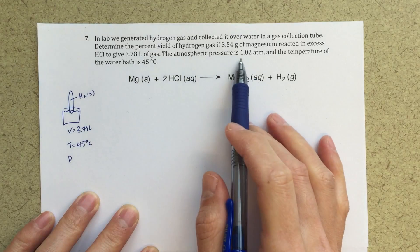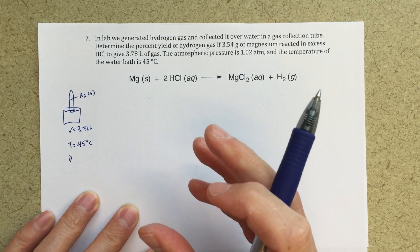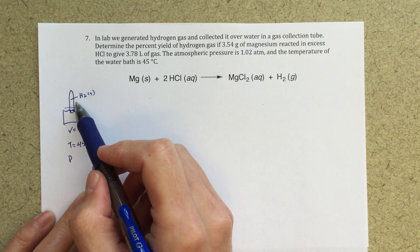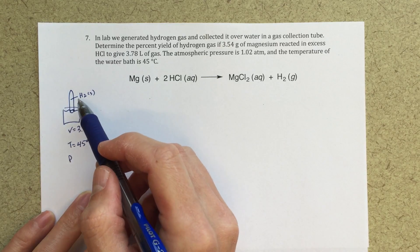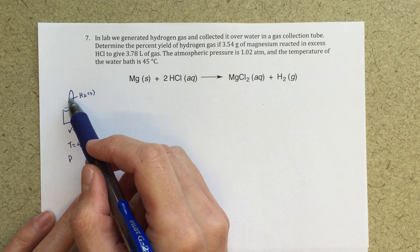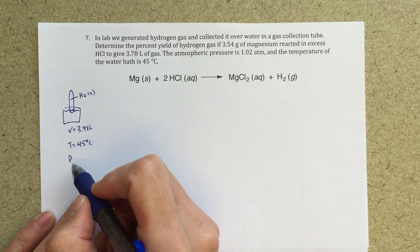And then we're given a pressure. And this pressure, 1.02 atm, that's the total pressure, and we would assume that that's the total pressure inside of that tube and outside, right, that's the pressure pushing down on the water, so it will also be the pressure inside of that tube of that gas.